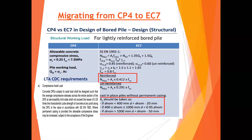You can see this structure design which has also been revised. Now take a look at the comparison of structure loads between CP4 and EC7. In EC7, take note that they reduce the effective area of the pile, because there is no permanent casing — in Singapore we don't use permanent casing. The LTA CDC requirement asks you to use the smaller of the two values from CP4 and EC7.